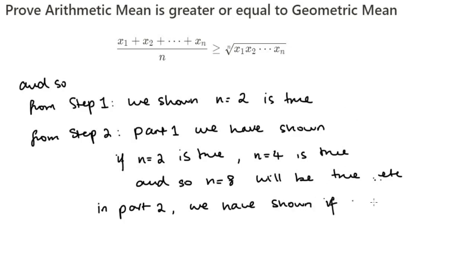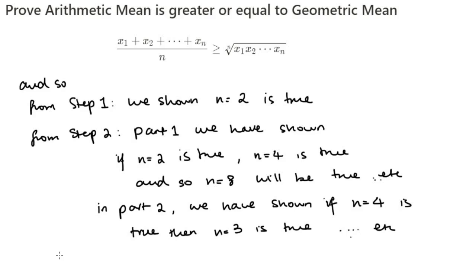In the backwards part of the induction, we show that if n equals 4 is true, then n equals 3 is true; and if n equals 8 is true, then n equals 7 is true, and n equals 6 is true, and n equals 5 is true, and so on.